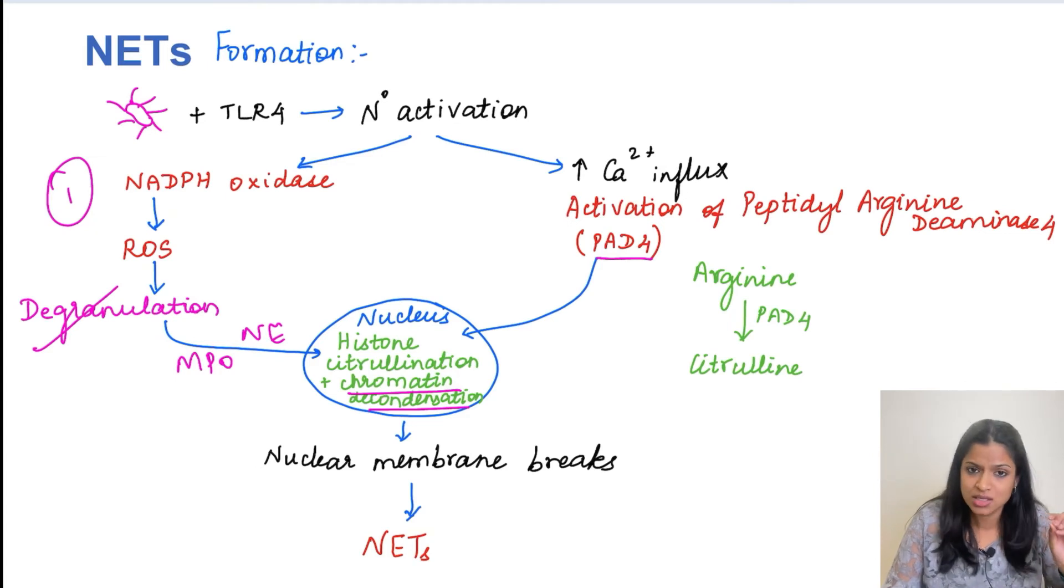So histones are going to be present on the DNA. So the arginine residues present on the histone proteins will be converted into citrulline proteins by the help of this enzyme PAD4. So this again is going to happen inside the nucleus. So two things will happen.